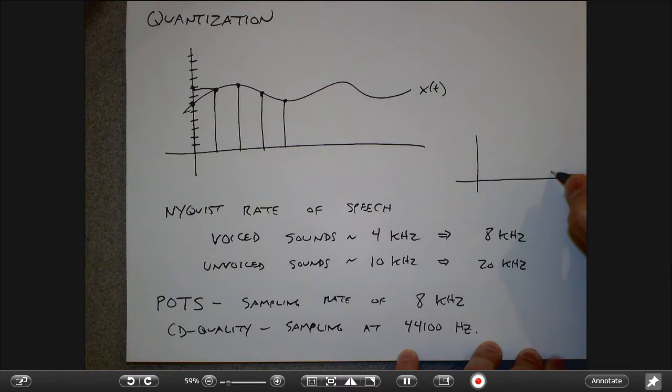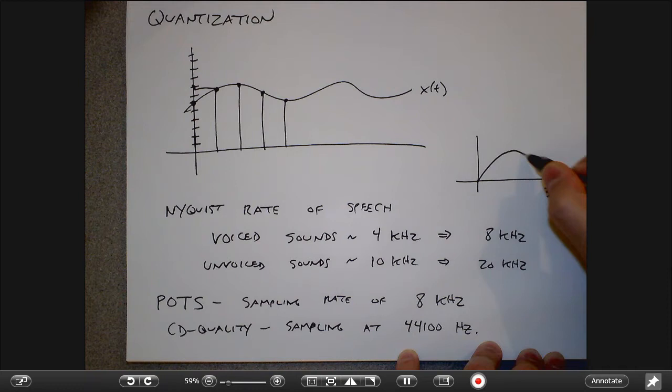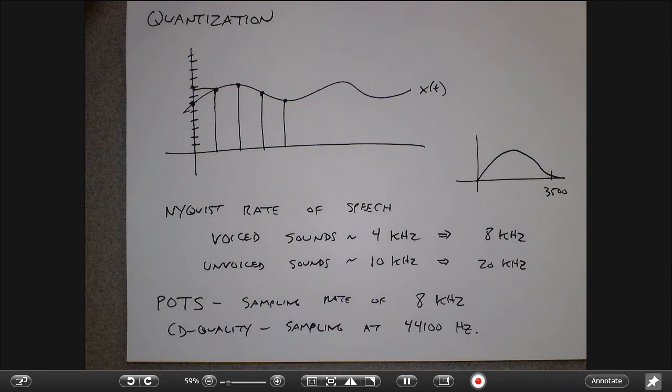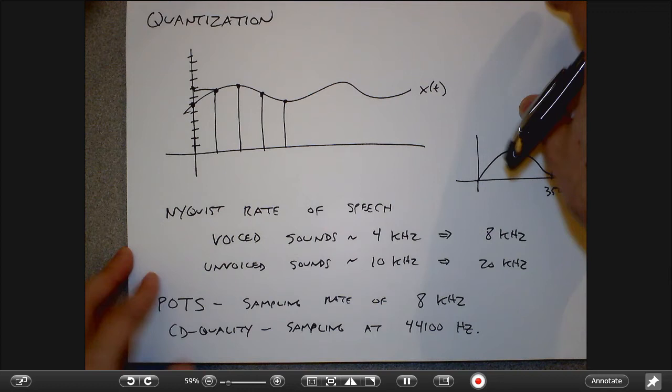The telephone system also has more of a frequency response where it's more sensitive in the middle and less sensitive at the ends. If you actually look at the frequency response of the telephone channel created by twisted pair copper wire, you'd see that. That was kind of a digression.